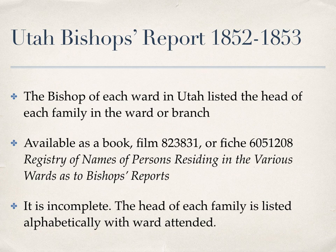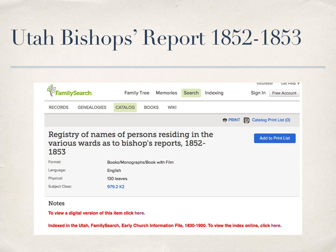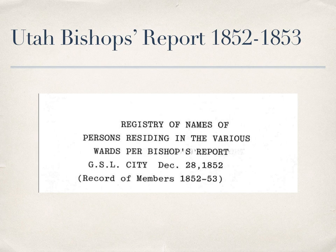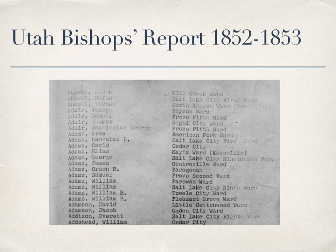From the wiki page on LDS Census, I click on the link. It takes me to the registry of names, and I see there's a digital version of this item available by clicking the link where it says 'click here.' When I do that, it comes up with the title Registry of Names of Persons, etc., in Great Salt Lake City on December 28, 1852. As I scroll down through this, I can see the name of each male head of household and the ward where he was residing.